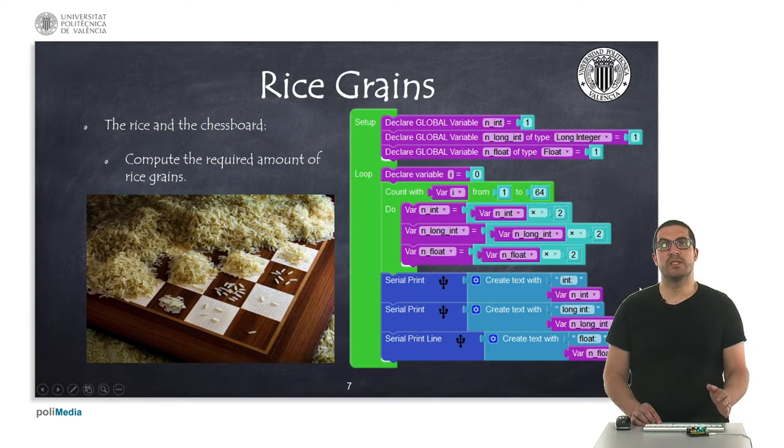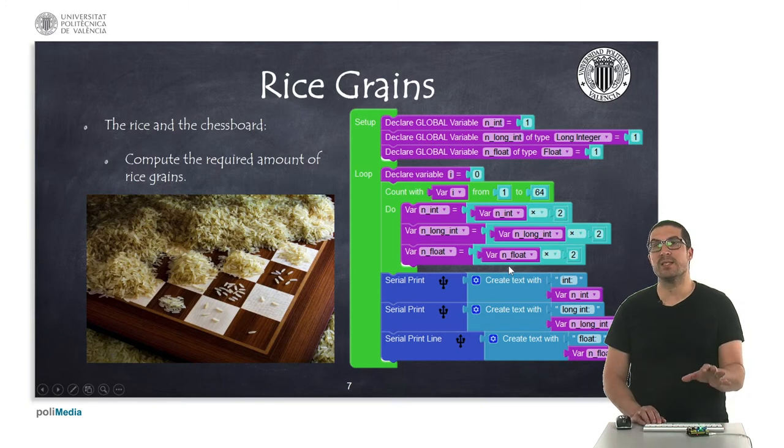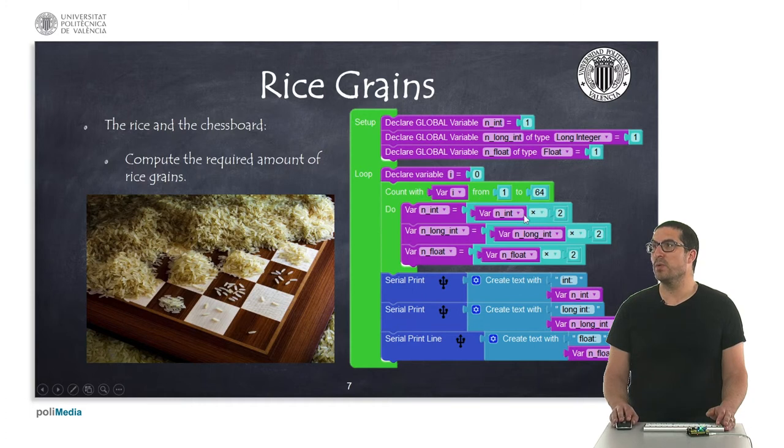We have up to 64 squares so in the end we have a really huge number of grains. Here what I'm computing is actually just this power using the variables and setting the new value to the previous value. Here we have the for loop and then at the end I'm just simply printing the result I get.